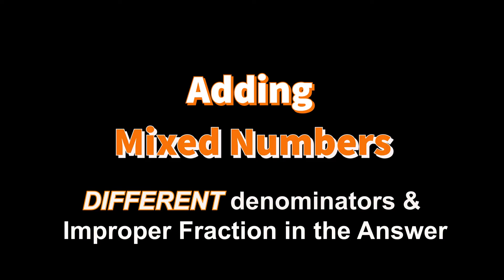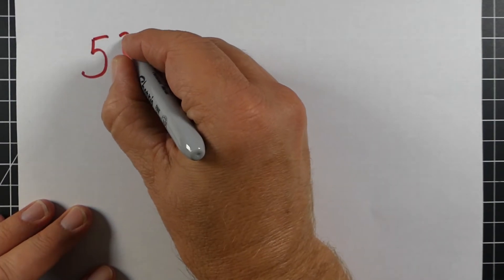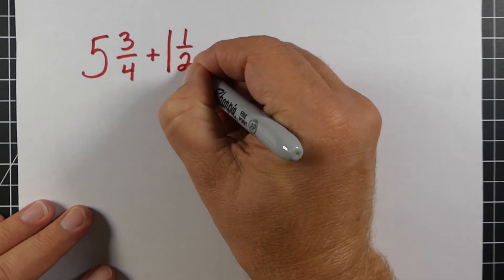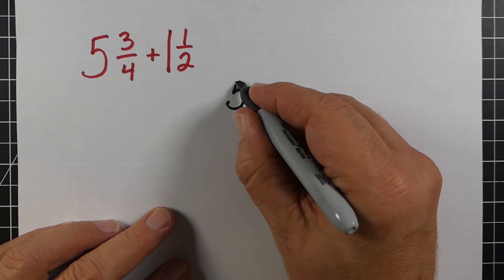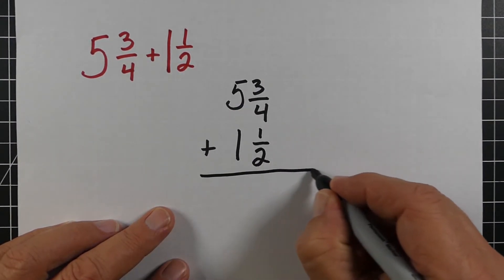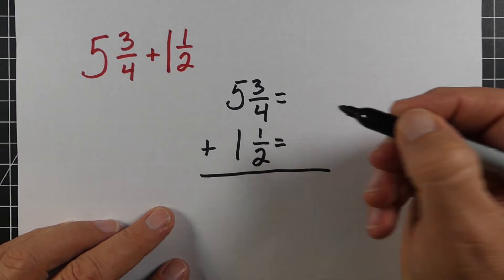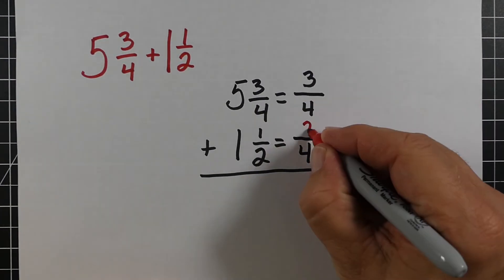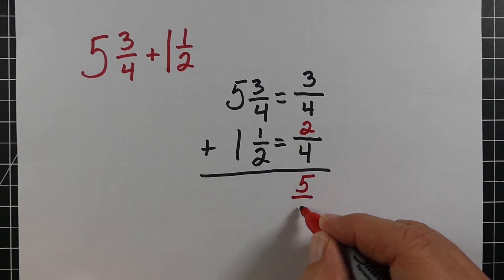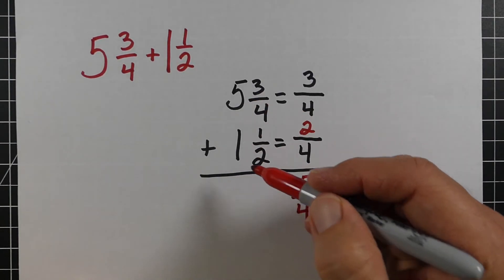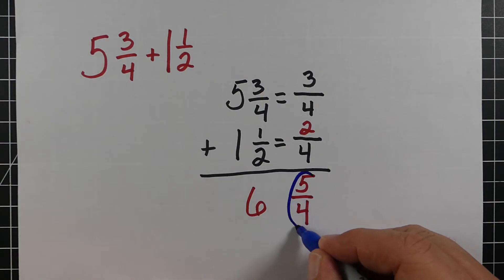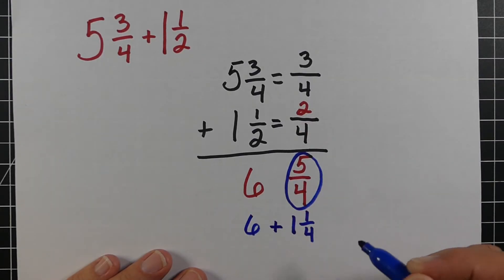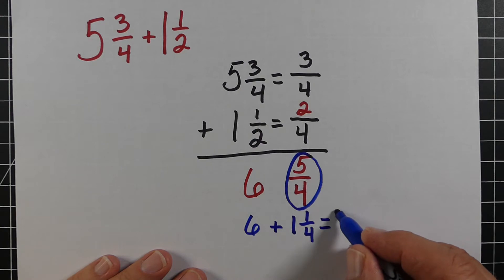Where it gets more challenging is when we have different denominators and improper fractions as the answer. For 5 and 3/4 plus 1 and 1/2, I stack them up. We need a good common denominator — 4 is the best choice rather than 8. The top fraction doesn't need to change. For the bottom, multiply 2 by 2 to get 4, so multiply 1 by 2 to get 2. Adding gives 5/4, and 5 plus 1 equals 6. To address the 5/4: 4 goes into 5 once with remainder 1, giving 1 and 1/4. Adding that to 6, we get the mixed number 7 and 1/4.